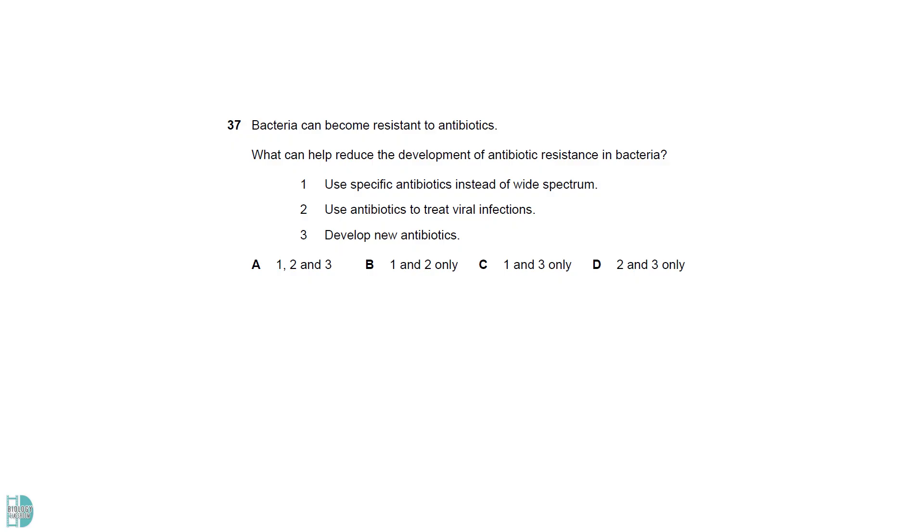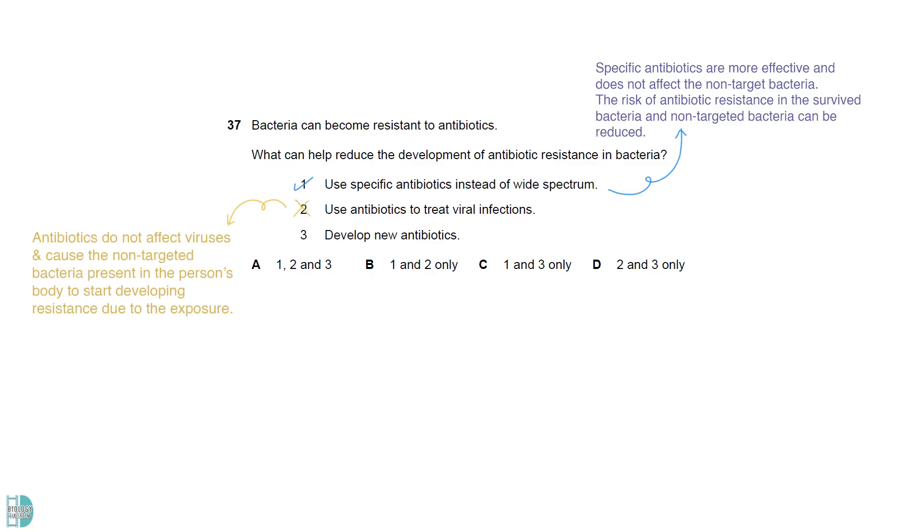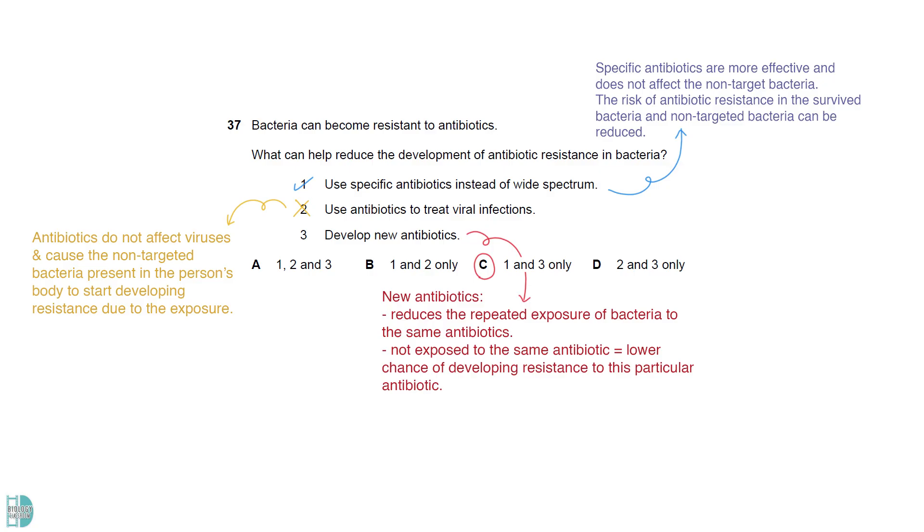Using specific antibiotics can kill the bacteria more effectively and does not affect the non-target bacteria. So, the risk of antibiotic resistance in the survived bacteria and non-target bacteria can be reduced. Antibiotics do not affect viruses. It will cause the non-targeted bacteria present in the person's body to start developing resistance due to the exposure. Having new antibiotics reduces the repeated exposure of bacteria to the same antibiotics. Not only this can kill them more effectively, but when they are not exposed to the same antibiotic again and again, the chance of them developing resistance to this particular antibiotic will reduce.